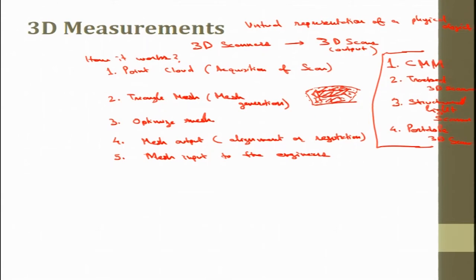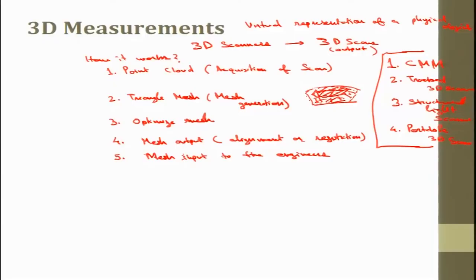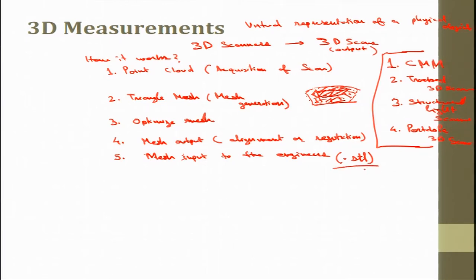The mesh is generally produced in STL format. Computer software can be used to clean up the scan data — filling holes, correcting errors, and improving data quality. The resulting triangle mesh is typically exported in STL format and can be converted into known forms like B-spline or Bezier curves if possible. CAD modeling can be produced from this output. This was the brief introduction about 3D scanning.